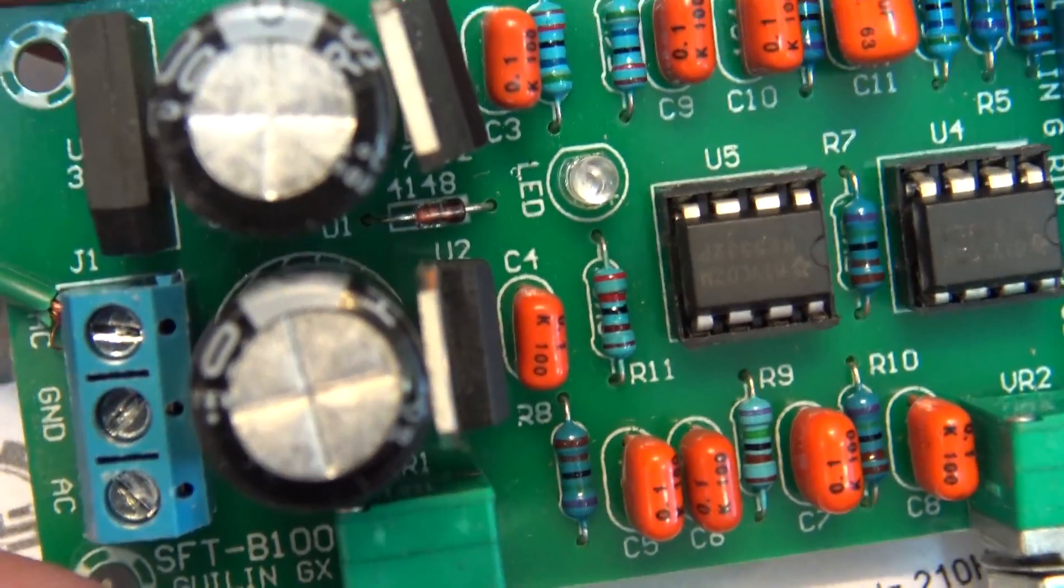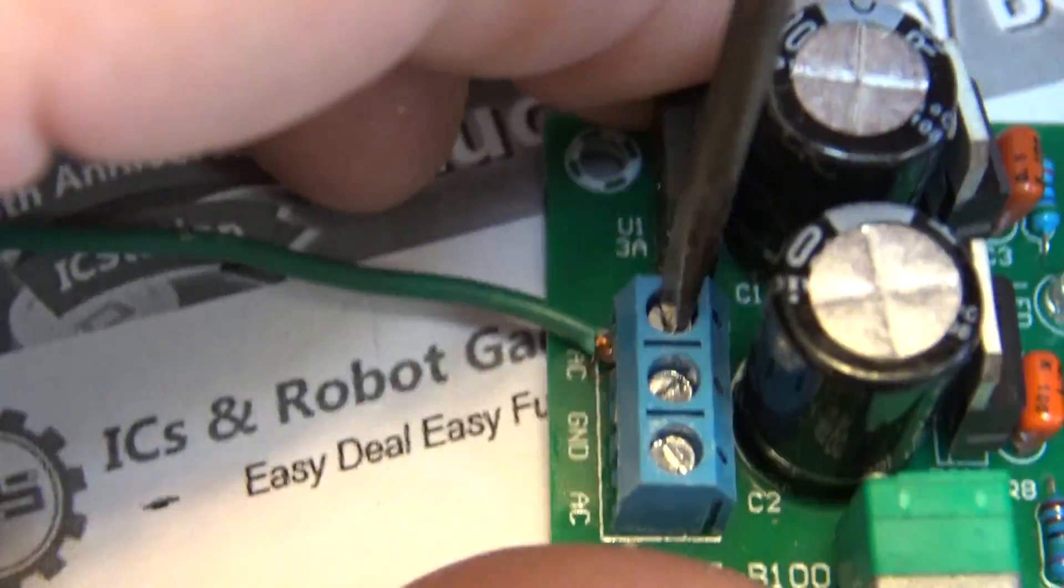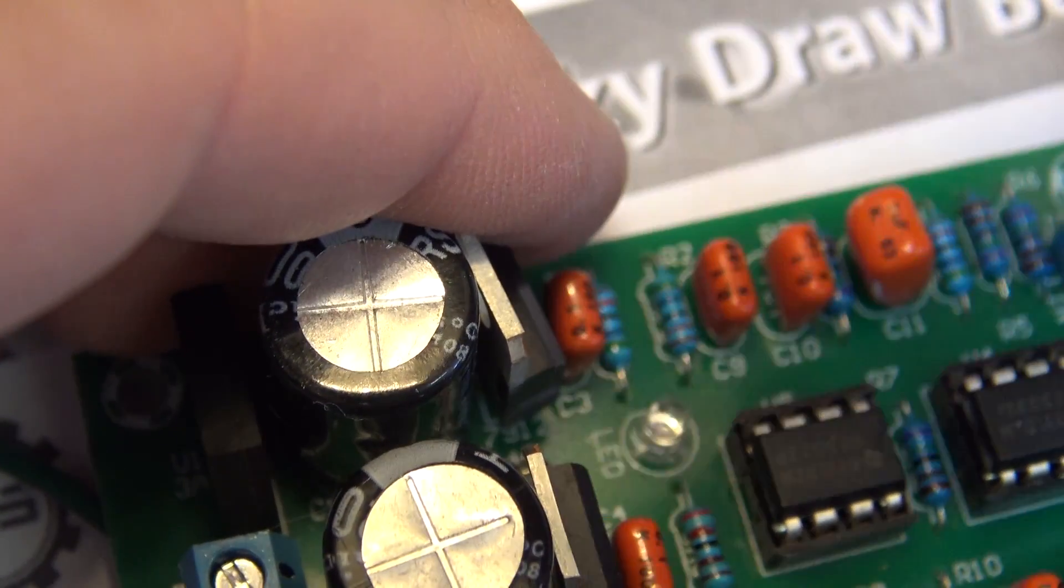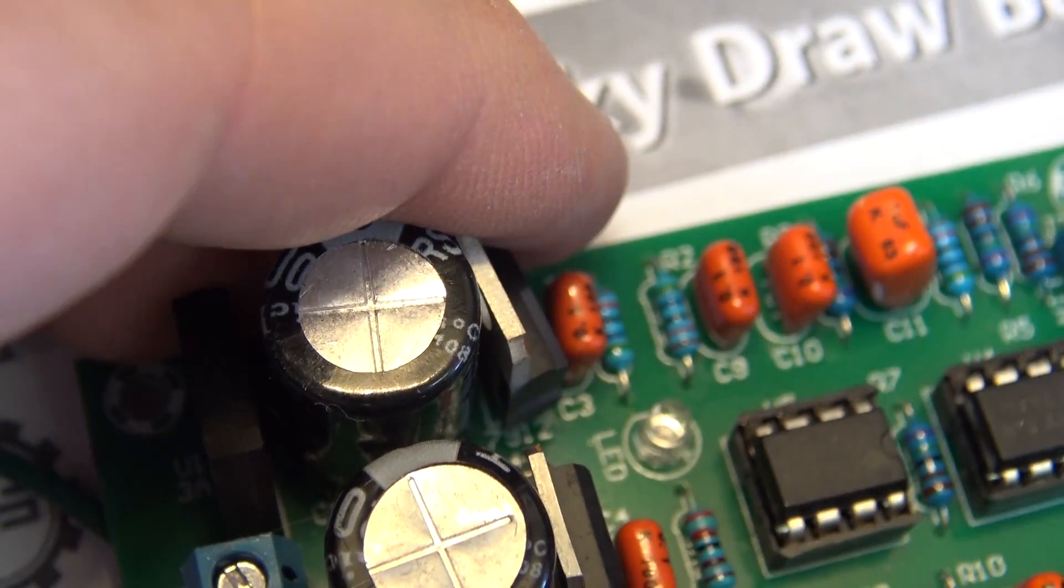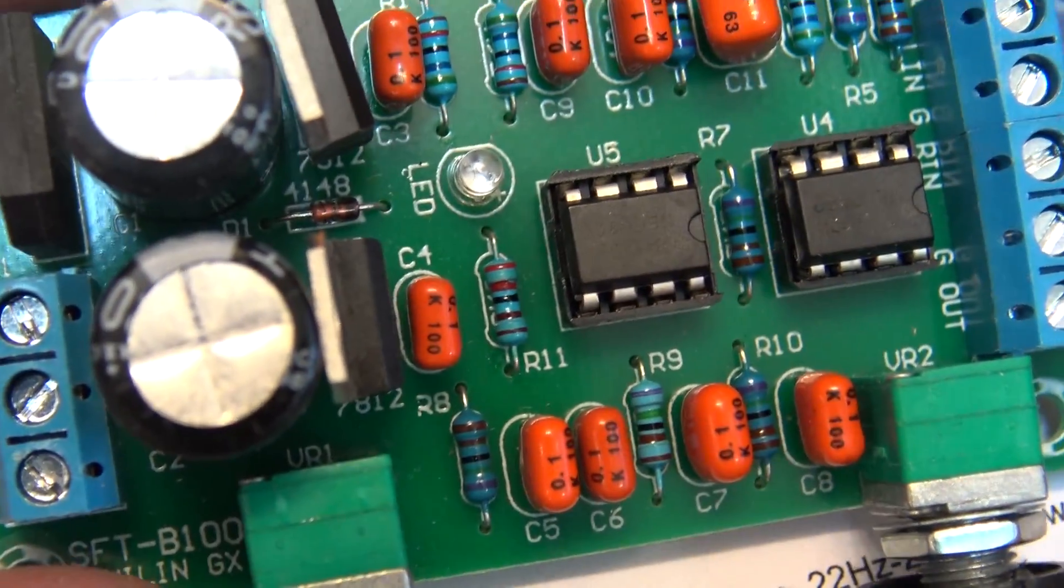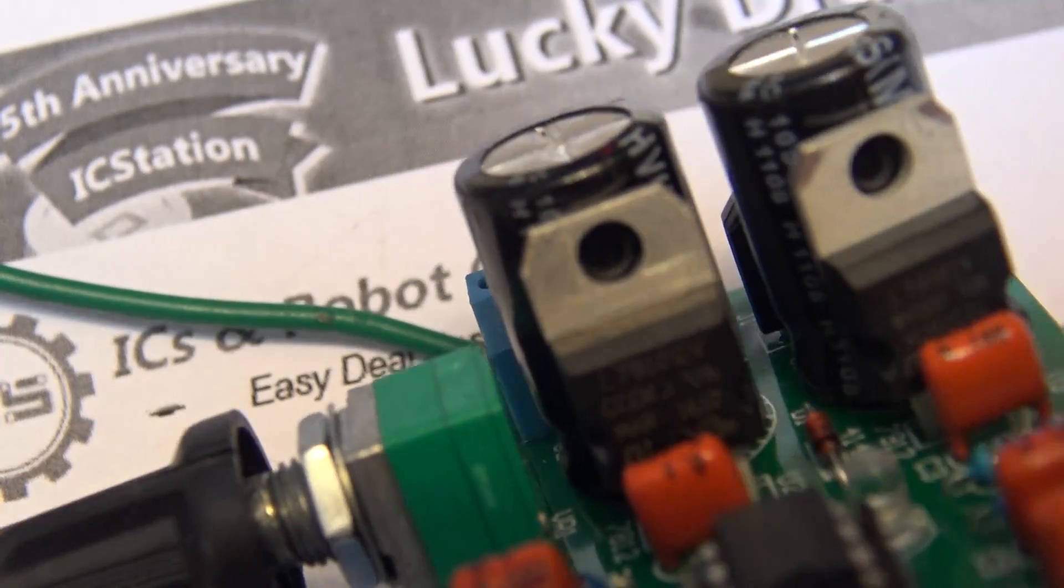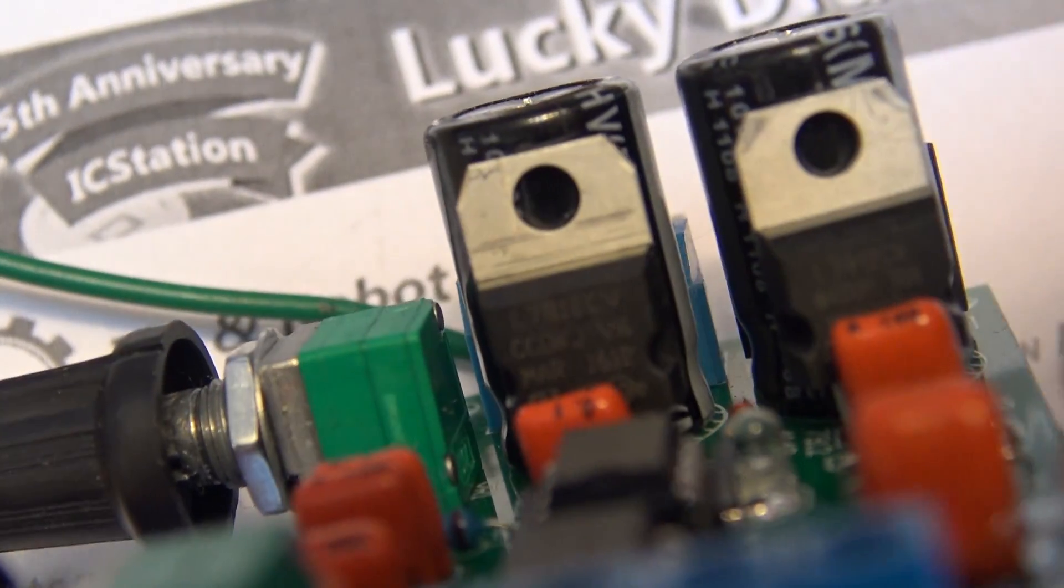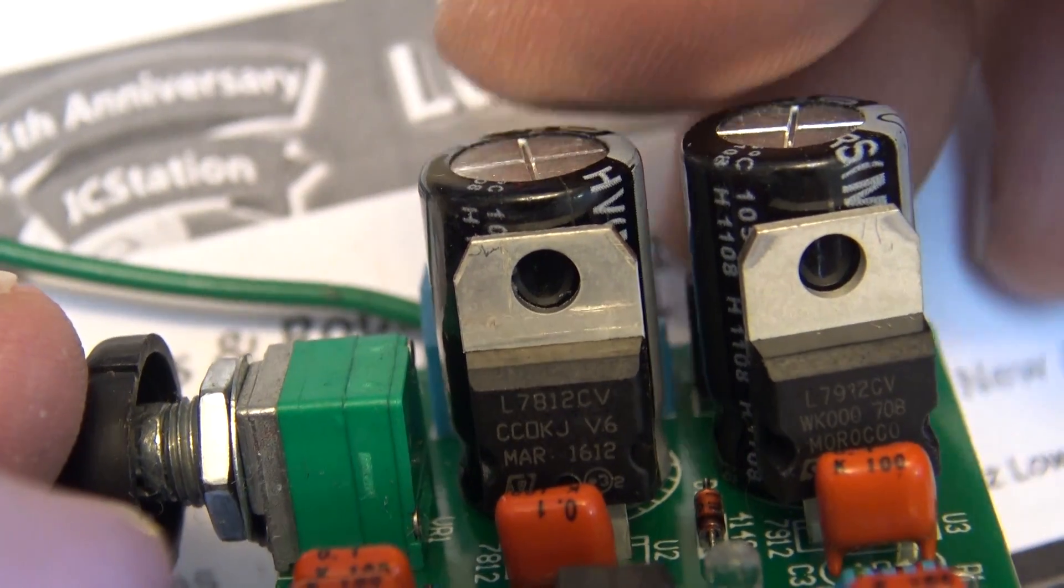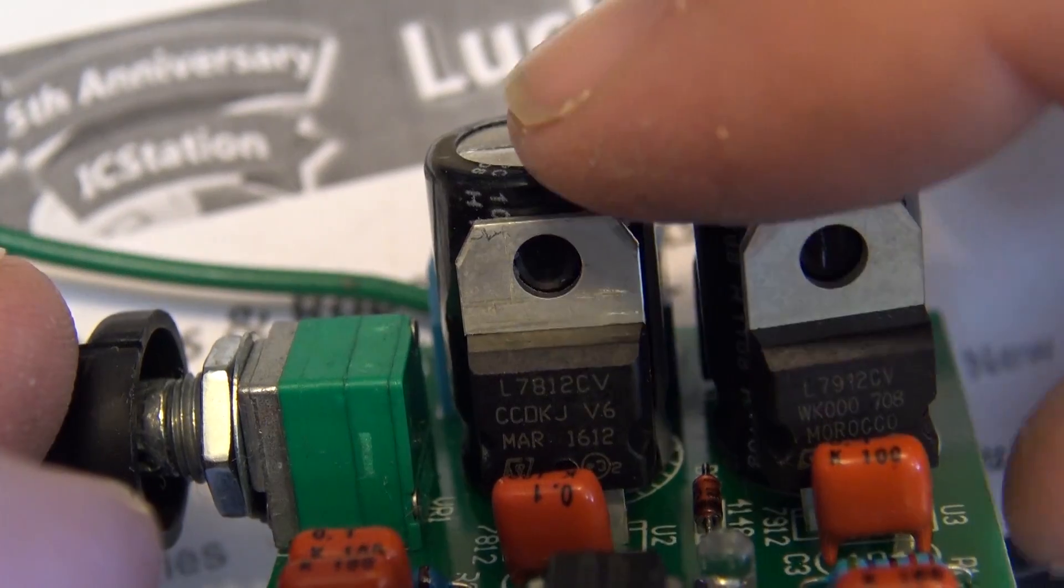Here's a closer look at the board itself. I'm just disconnecting it so you guys can get a closer look at the board once I take all the wires off. Here are the capacitors, 7812 and 7912 12 volt positive and negative regulator ICs.